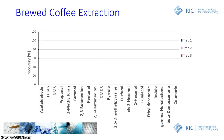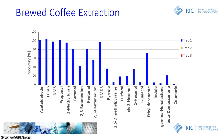This graphic presents the recovery in percentage of different compounds found in the brewed coffee extract. By trapping and desorbing the three different traps separately, you can clearly see the influence of the kind of trap being used. Trap 1 is really dedicated for the trapping of very volatile compounds.